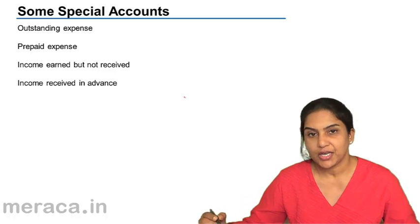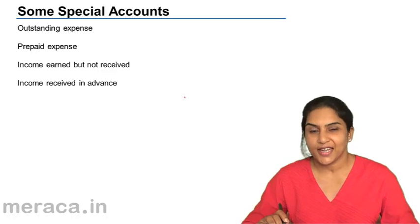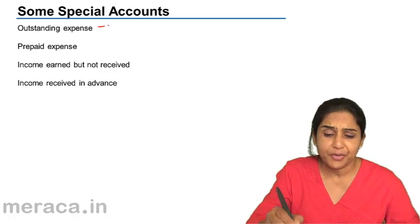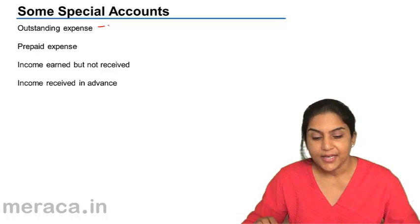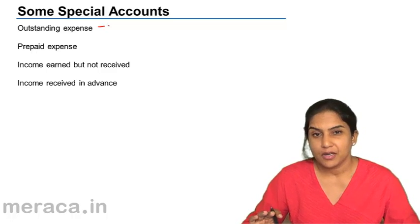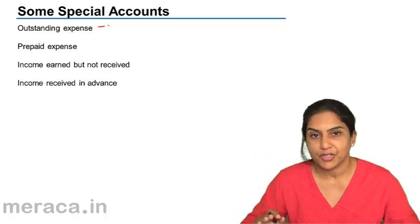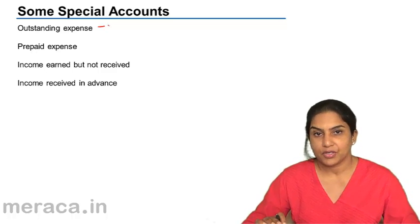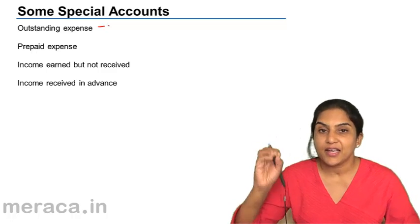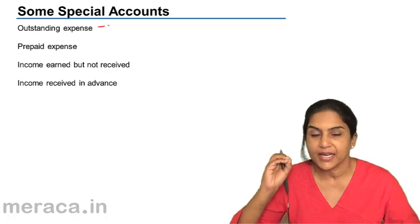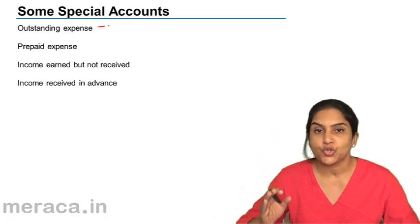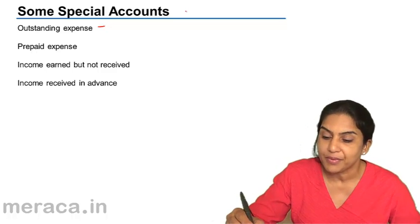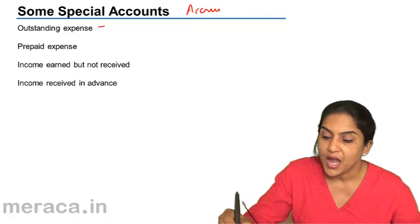Let us consider some more special accounts. One is the outstanding expense account, which we briefly discussed before. Consider a salary account. Suppose the salaries are paid by the proprietor on the 7th of the next month — a week after the month is over. When we close our books of account on 31st March, salary is payable and the business has a liability. We are supposed to record all expenses following the accrual concept.